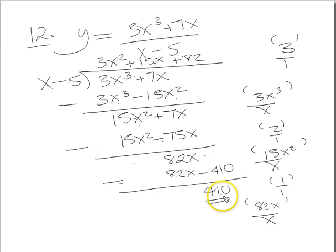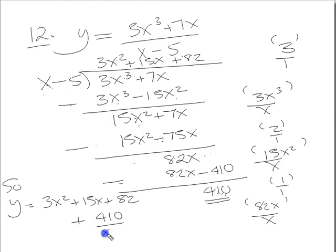Finally, that's now going to give us a proper fraction. It's of order 0, this is of order 1. So what have we got? Y equals 3x squared plus 15x plus 82, which is what we've got here. Then we have to add on what's left, the remainder. So it's 410 left, which is still divided by x minus 5. That's the final answer.